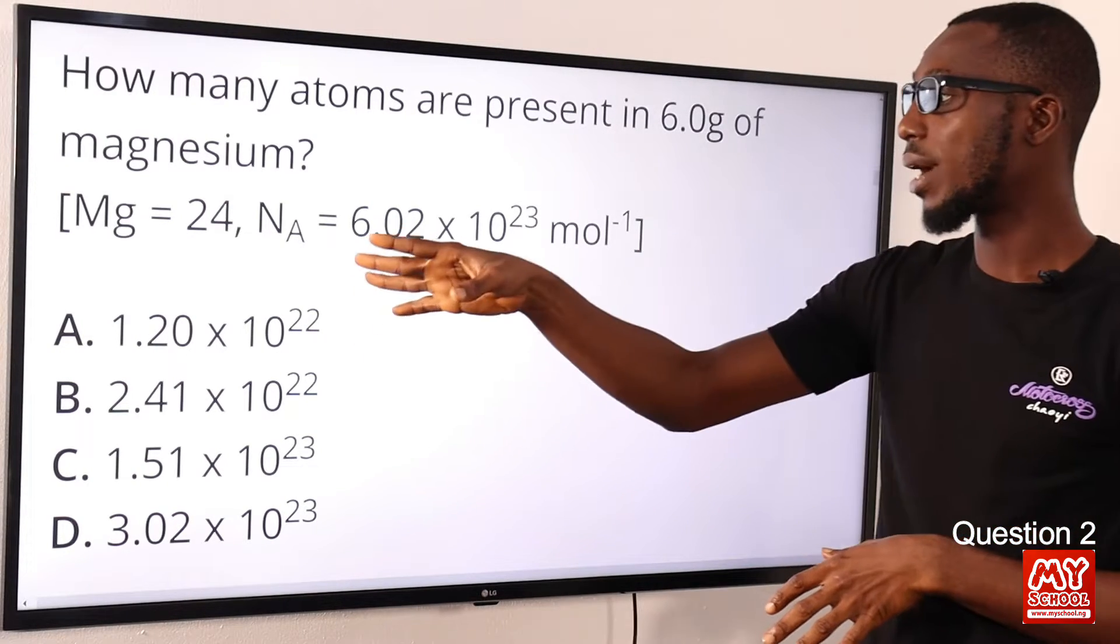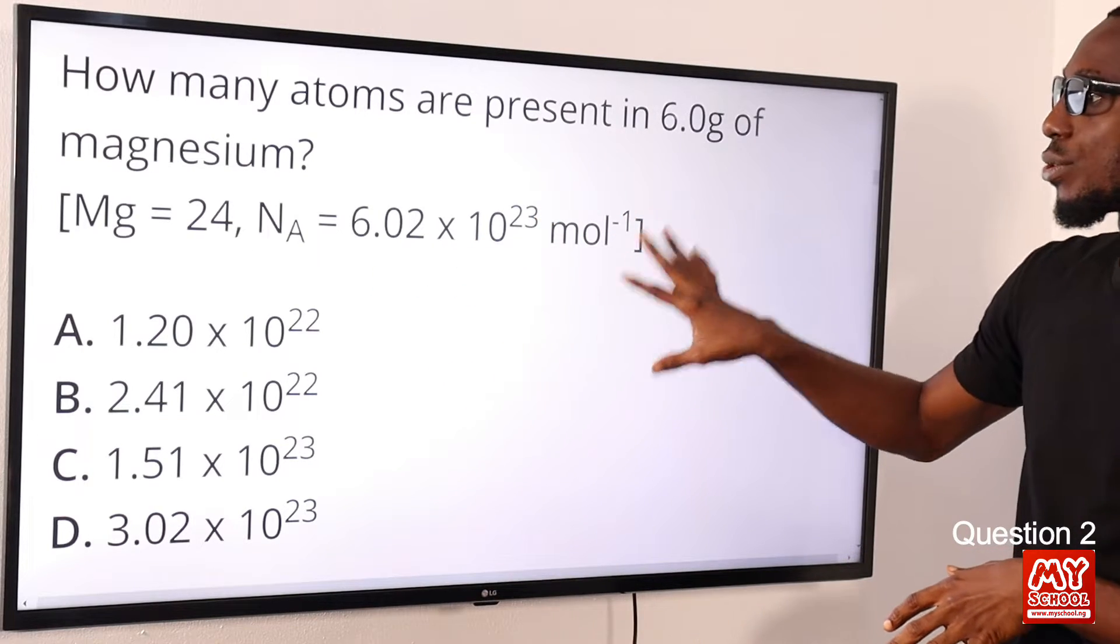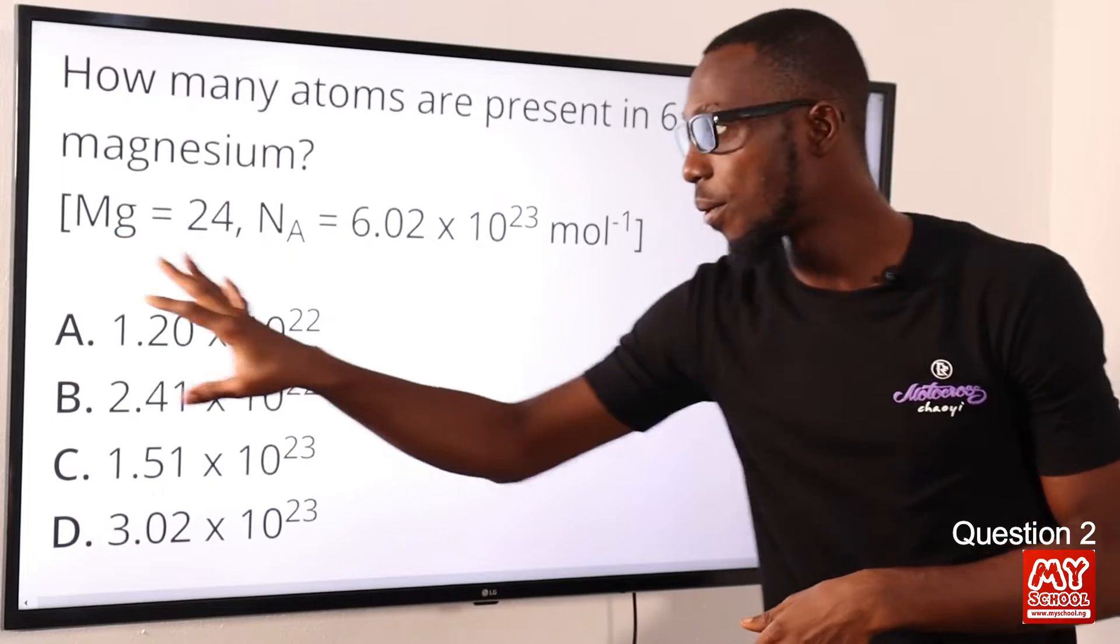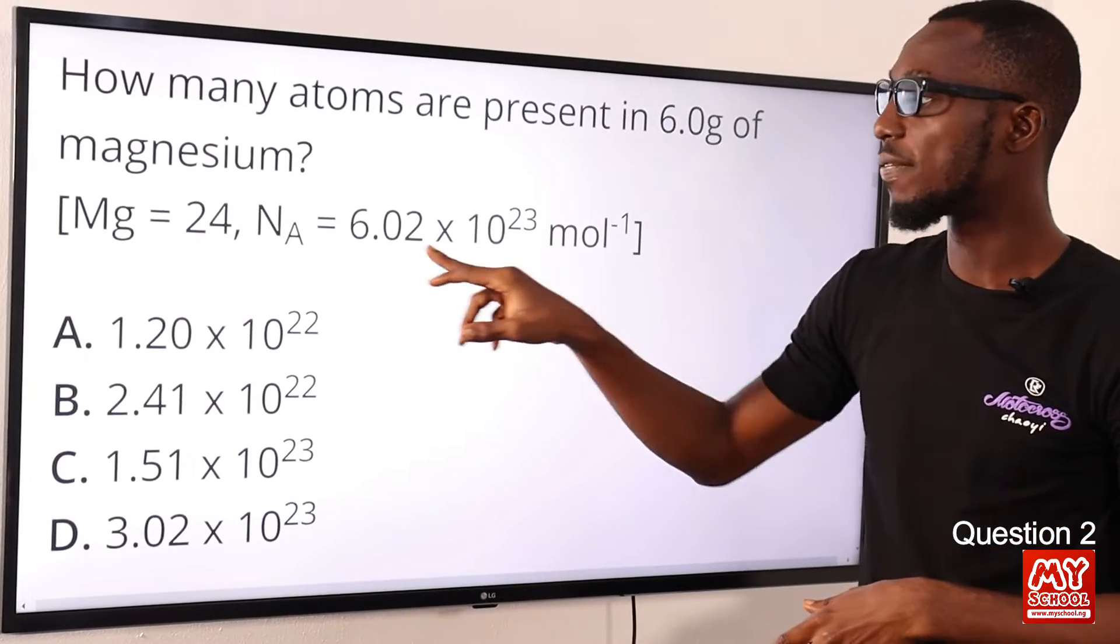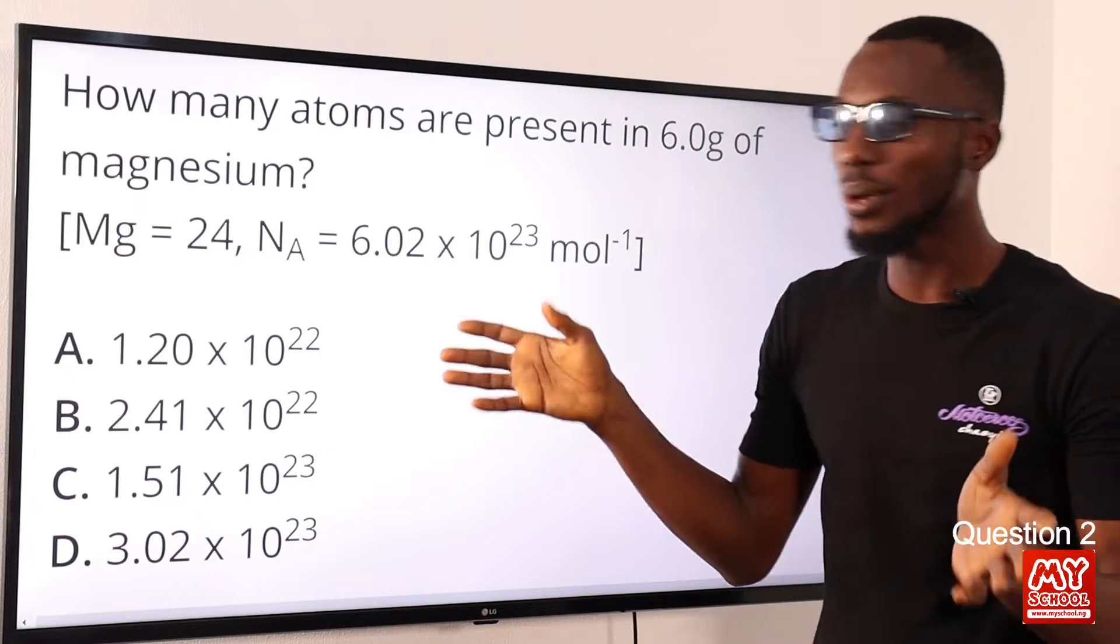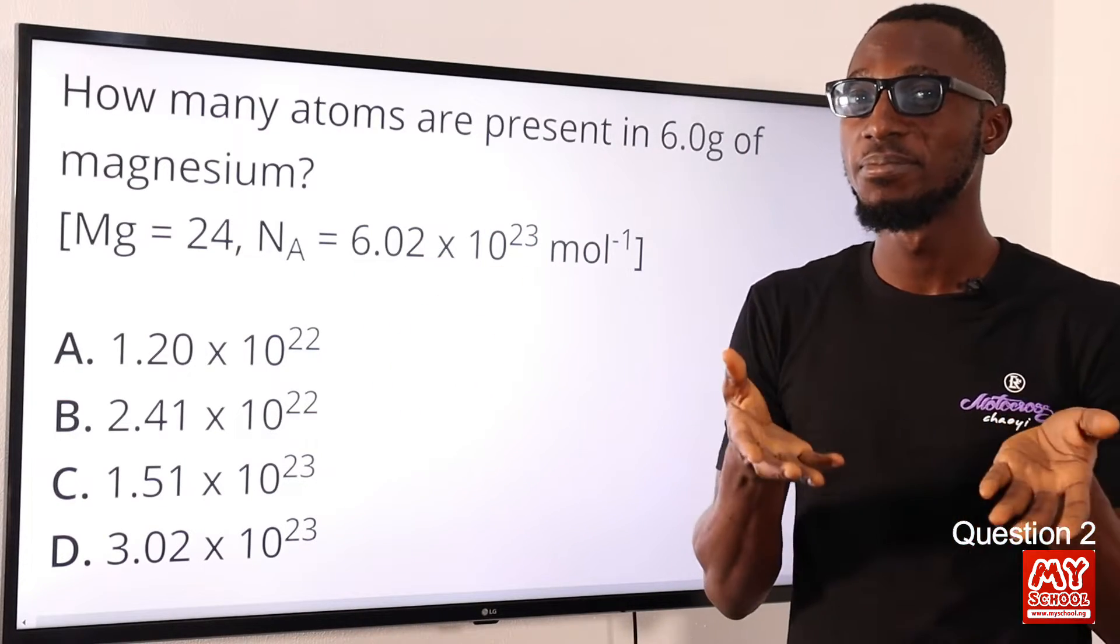We have the Avogadro's number here as 6.02 × 10²³. So if 6 of this means this has been split into 4, that means we are definitely going to divide this by 4. Let's just take away the decimal points—60 divided by 4 should give you 15.